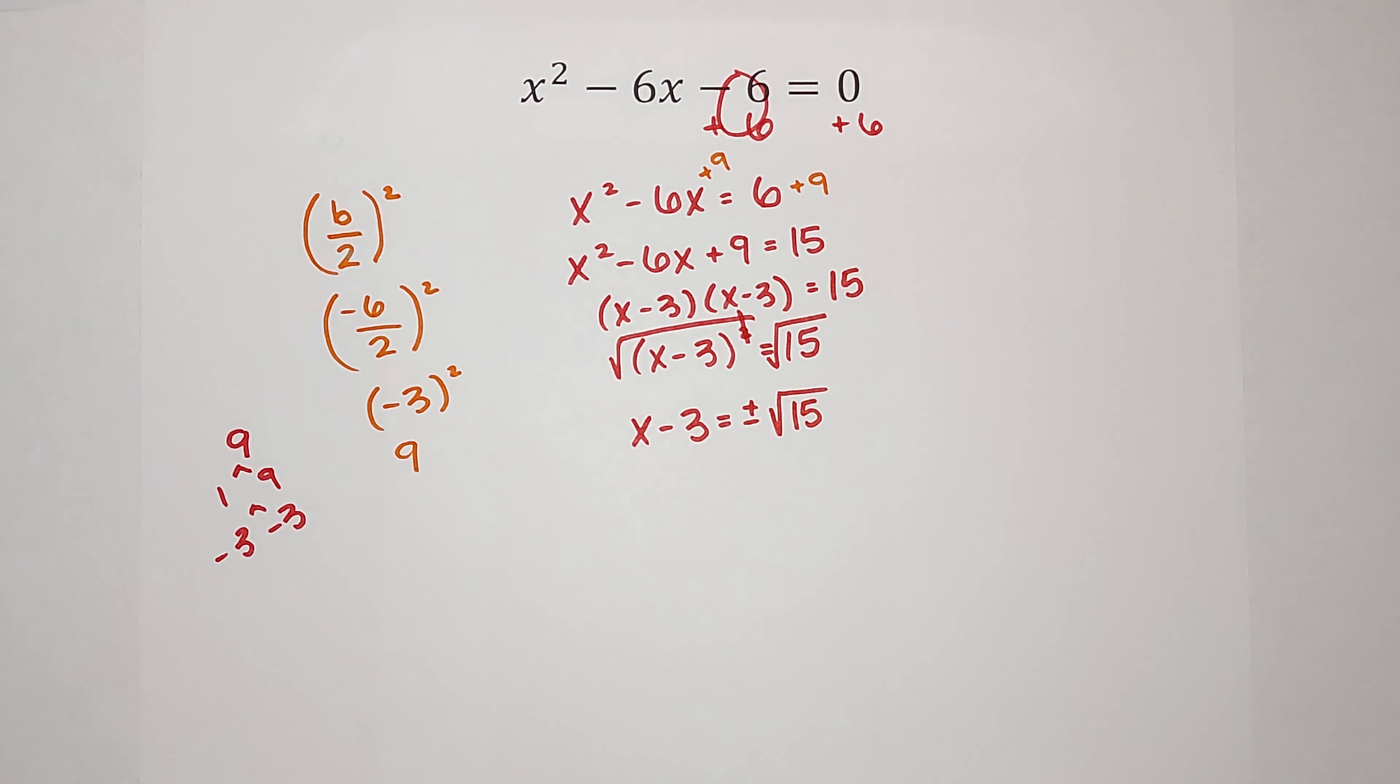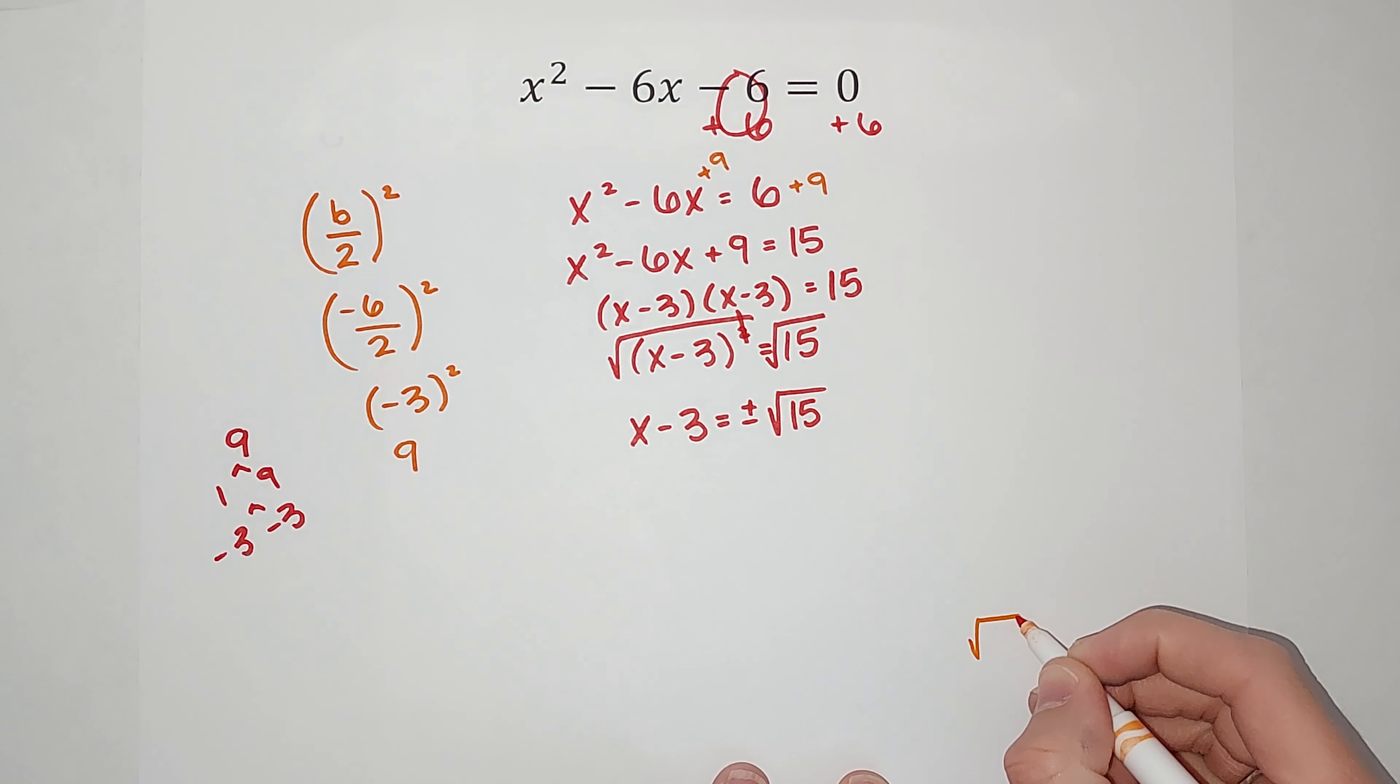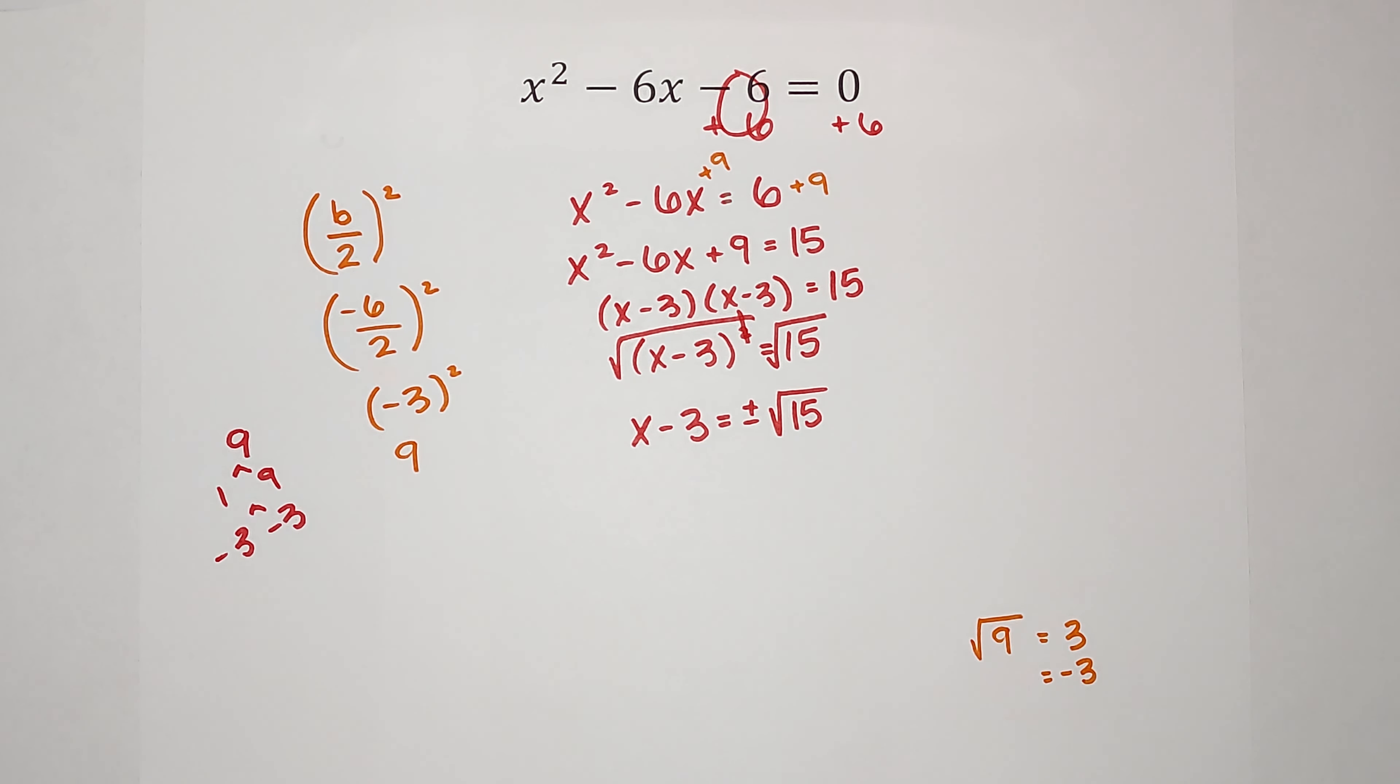So I'm going to write it as equals plus or minus the square root of 15. Why is this a thing? Now 15 doesn't have a pretty square root number. So let me show you an example with like a 9. So the square root of 9 could be 3, because 3 times 3 is 9. But hear me out, it could also be negative 3, because negative 3 times negative 3 is 9. So that's why we use that plus or minus.